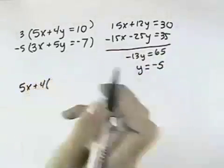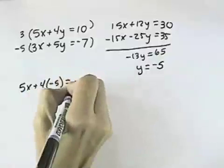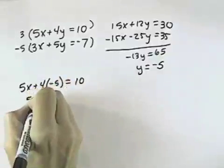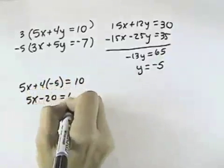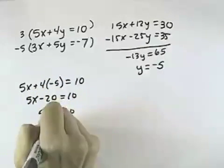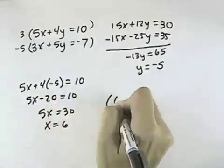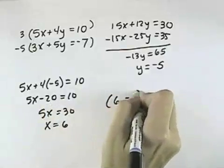Going back to either of my original equations, I can substitute the negative 5 in for y to solve for x. So that I have 5x minus 20 equals 10, 5x equals 30, and x equals 6. So that my solution set is 6, negative 5, the one ordered pair.